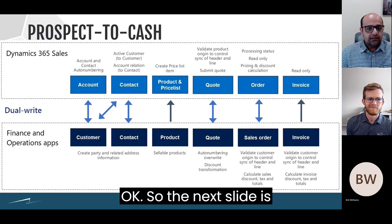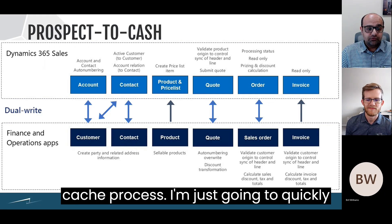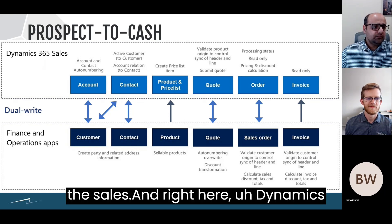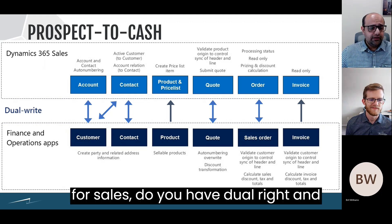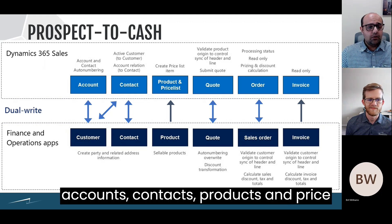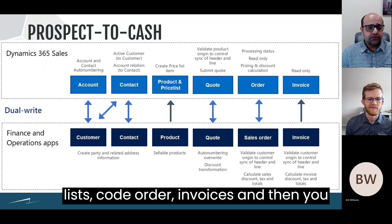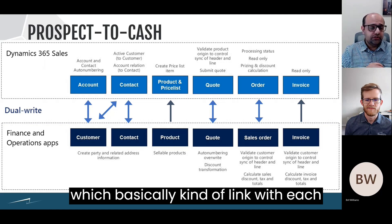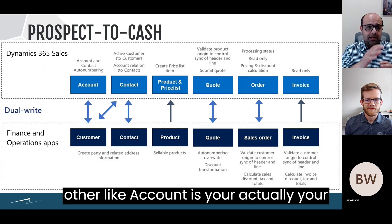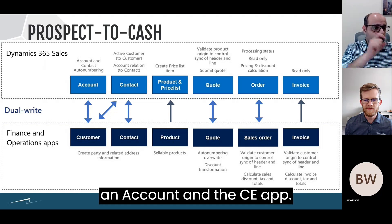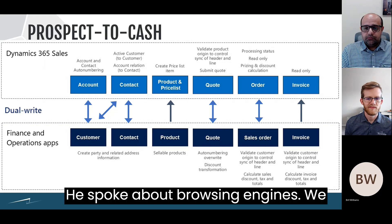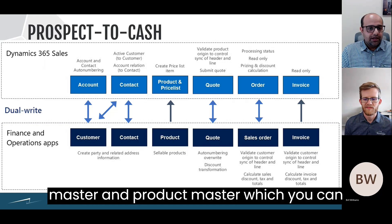The next slide shows the Prospect to Cash process. You have Dynamics for Sales here, dual-write, and Finance and Operations. You can see accounts, contacts, products and price lists, quotes, order invoices, and the different concepts that link with each other — for example, an account in CE is actually your customer in ERP. We've spoken about pricing engines, customer master, vendor master, and product master, which you can manage.